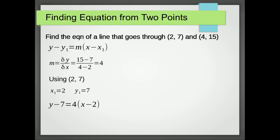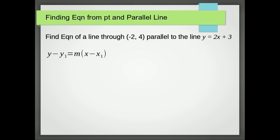So what about finding the equation from a point and a parallel line? Well, this is really like our first example. Our line, y equals 2x plus 3, has a gradient of 2. So we have m equals 2.